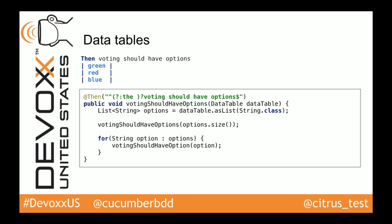Cucumber gives us some syntactical sugar here. We can also provide a data table, which is passed in automatically as a data table object. I can have operations on this data table object — checking the size of the options, and checking for each given line in the data table that the option is available on the voting. You can also have optional capturing groups, like the leading 'the', which is optional. In the feature specification you can write 'then the voting should have options' or 'then voting should have options' — it's just syntactical sugar.